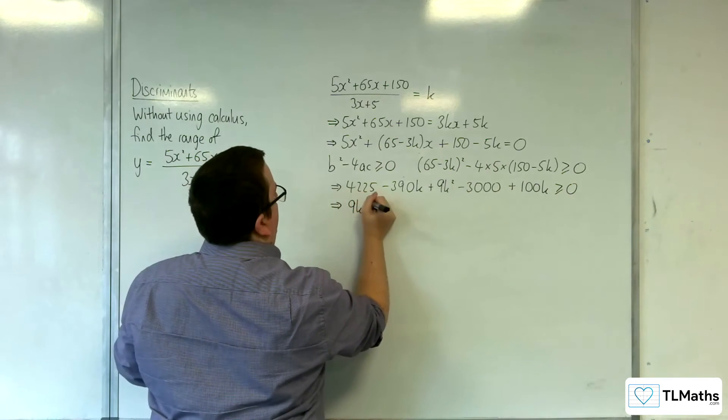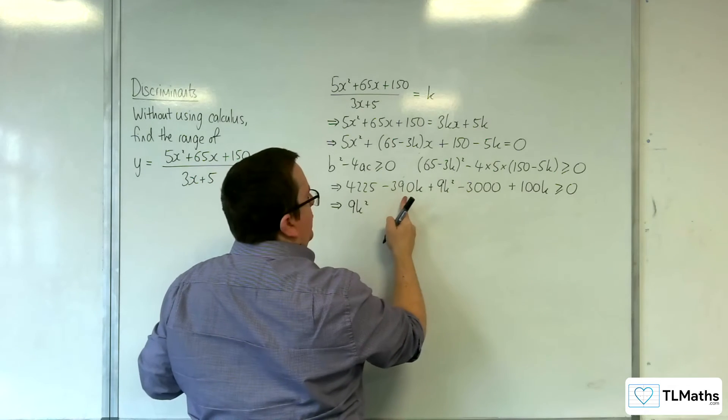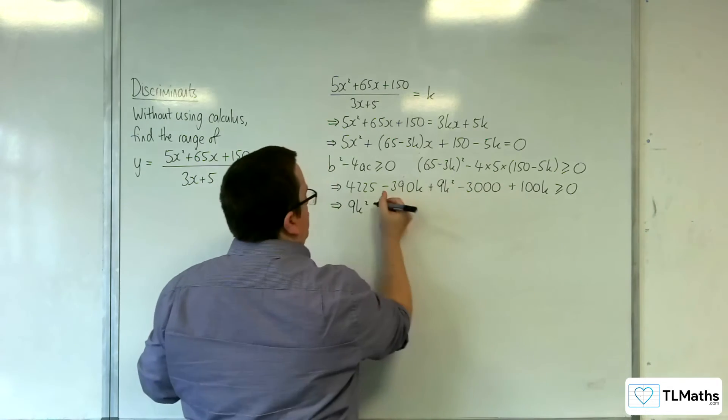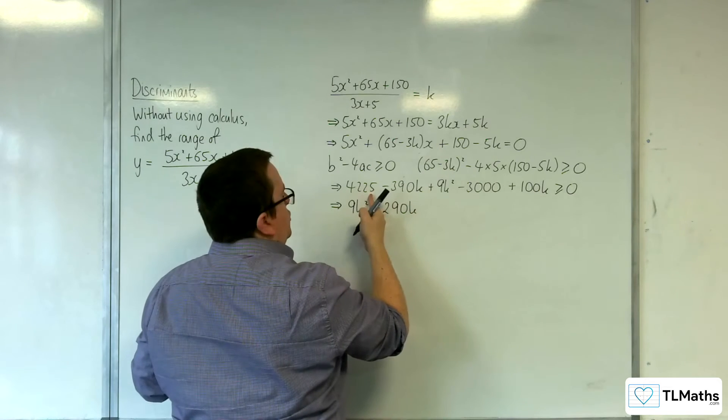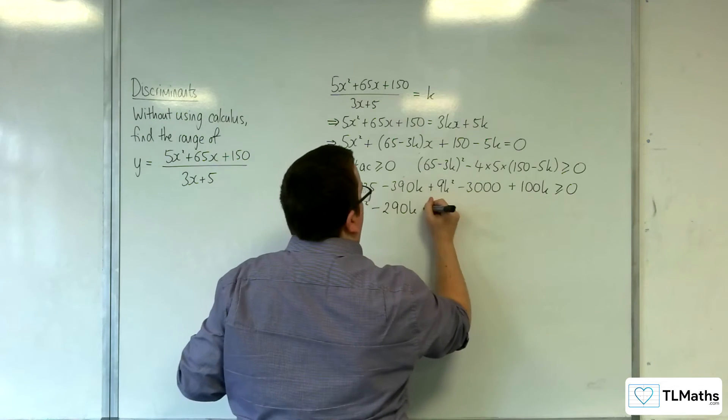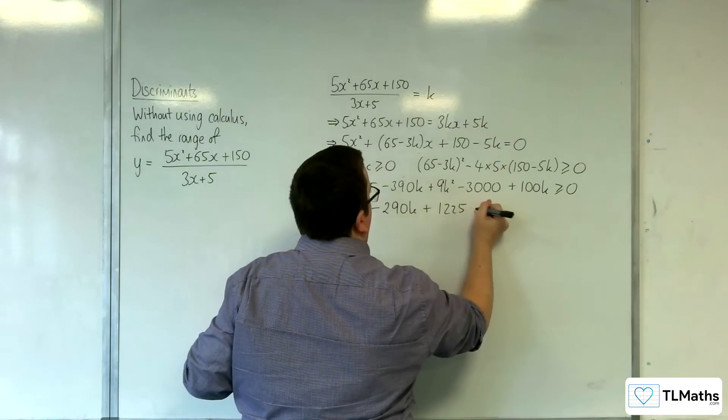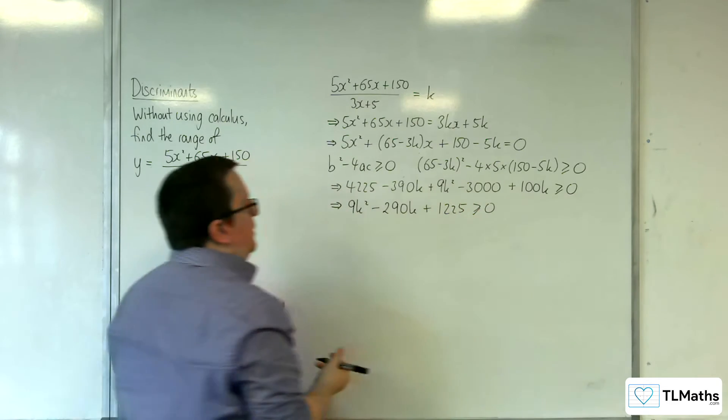So I've got the 9k squared, I've got minus 390k plus 100k, so take away 290k. 4,225 take away 3,000 is 1,225, is greater than or equal to 0.